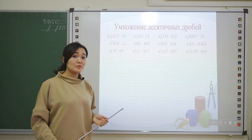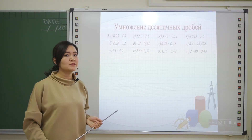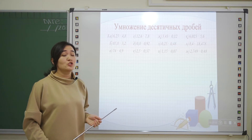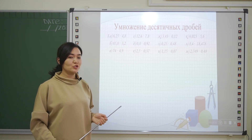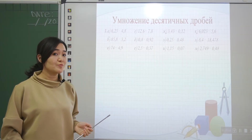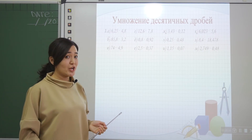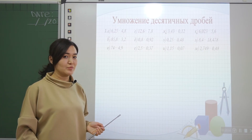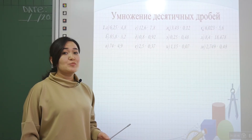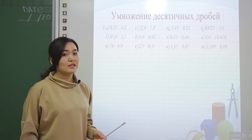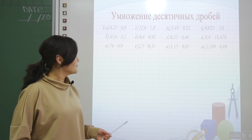To reinforce the topic, I suggest you complete the following task. Remember, to multiply decimal fractions: first, multiply them ignoring the decimal points; second, separate with a decimal point as many digits as there are in both factors after the decimal point combined.